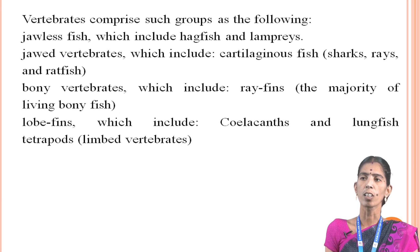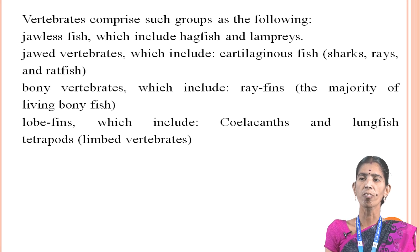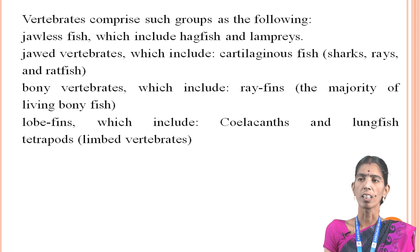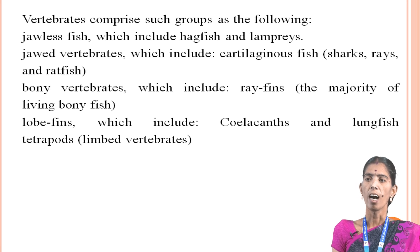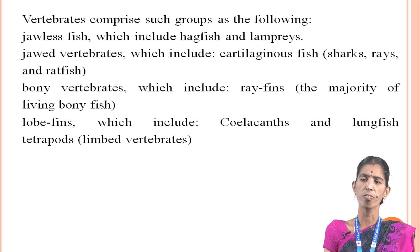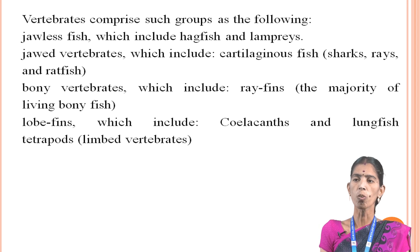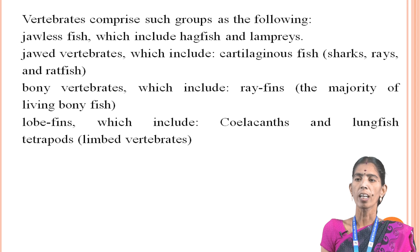Vertebrates comprise such groups as the following: jawless fish, which include hagfish and lampreys; jawed vertebrates, which include cartilaginous fish, for example shark, rays and ratfish; and bony vertebrates, which include ray-finned fish, the majority of living bony fishes, and lobe-finned fish, which include coelacanths and lungfish.